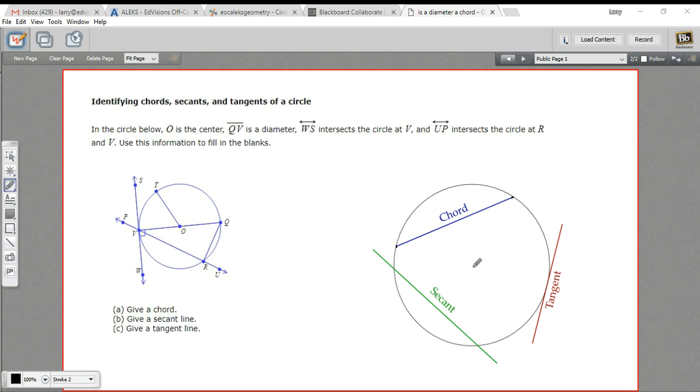You're probably familiar with a special chord, the one that goes through the center. So if this is the center of this circle, then a chord that goes through that center is a diameter. So diameter is a type of chord.